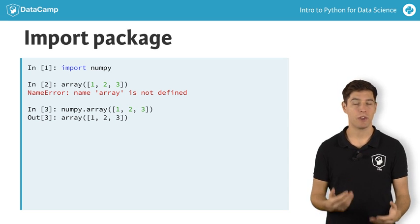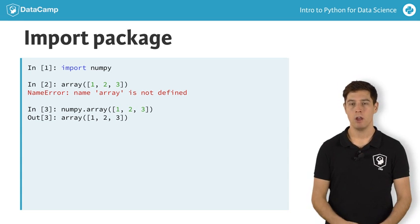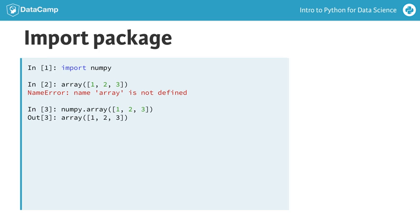Using this numpy dot prefix all the time can become pretty tiring. So you can also import the package and refer to it with a different name. You can do this by extending your import statement with as, like this. Now, instead of numpy dot array, you'll have to use np dot array to use numpy's array function.